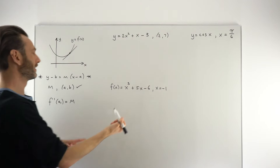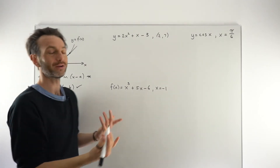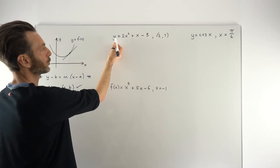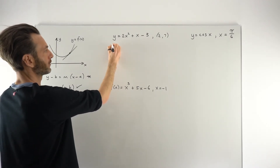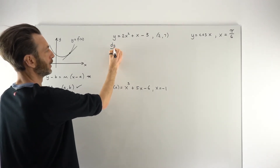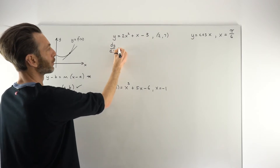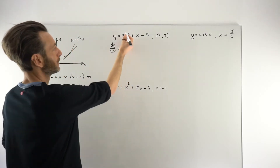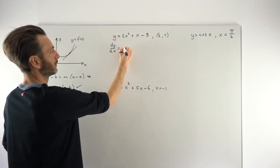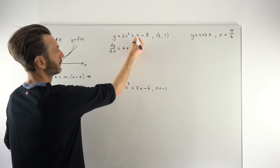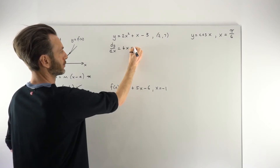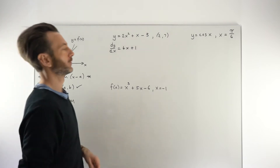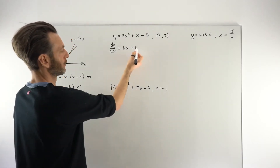We can see we've already got the point of tangency in this particular example, so we just need to find our gradient via the derivative. This function is given as y, so we express our derivative as dy/dx. Using the power rule — multiply by the power, reduce the power by 1 — for 2x squared the derivative is 4x, for x the derivative is 1, and the constant minus 3 goes to 0. So our derivative is 4x + 1.